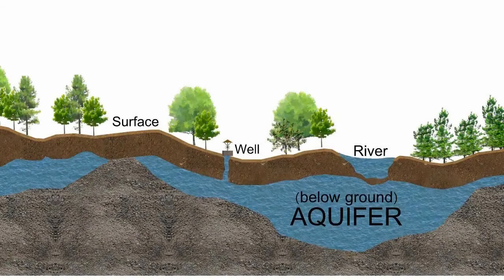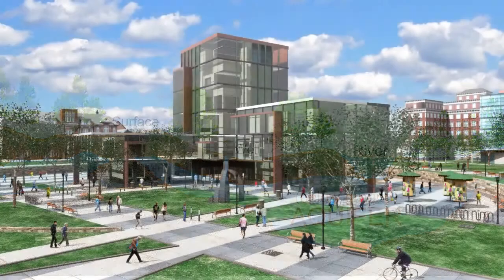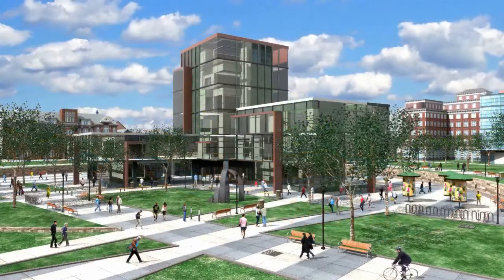Landscape architects design ways to divert and collect rainwater to prevent damage and replenish the aquifer. An aquifer is a below-ground natural reservoir of water that we use for drinking, cooking, bathing, and irrigation. The animation will demonstrate how rainwater is managed on a university campus plaza.